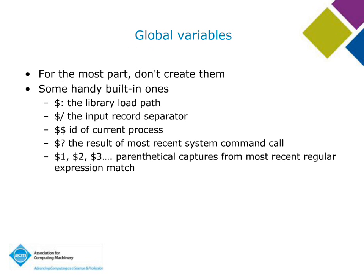Global variables — many of us are global variable skeptics, but Ruby does have some handy built-in ones, all beginning with dollar signs. These include the library load path, input record separator (in case you want to parse a file using something other than newlines), ID of current process, result of most recent system command call, and `$1`, `$2`, `$3`, etc. for the parenthetical captures from the most recent regular expression match. There are other ways to get those captures — these are sometimes pejoratively called the Perl-like regular expression variables.